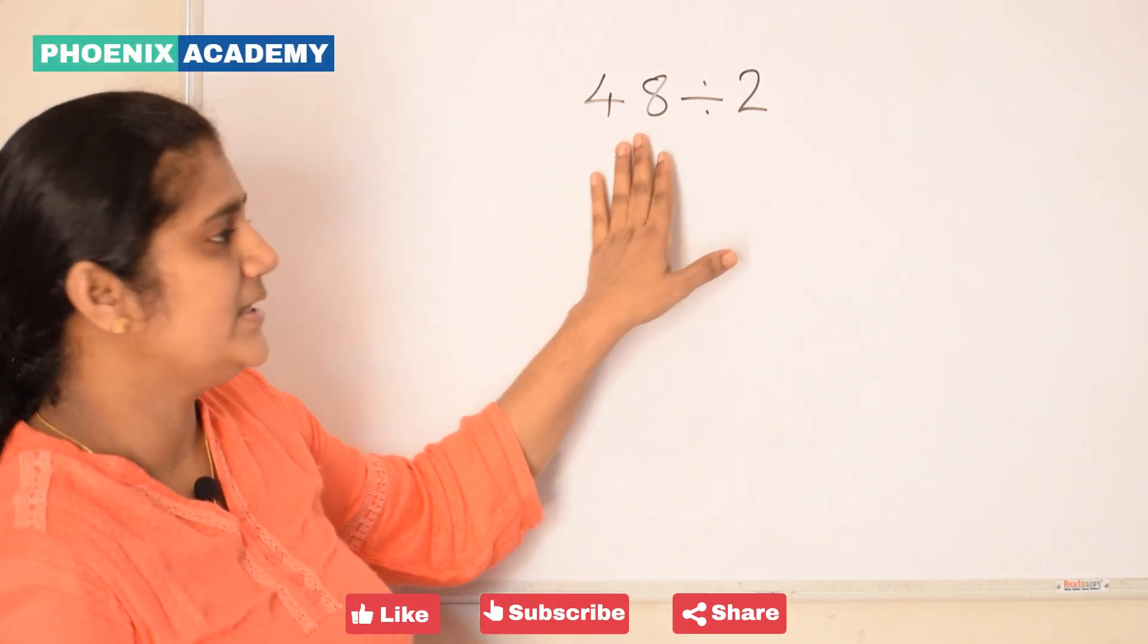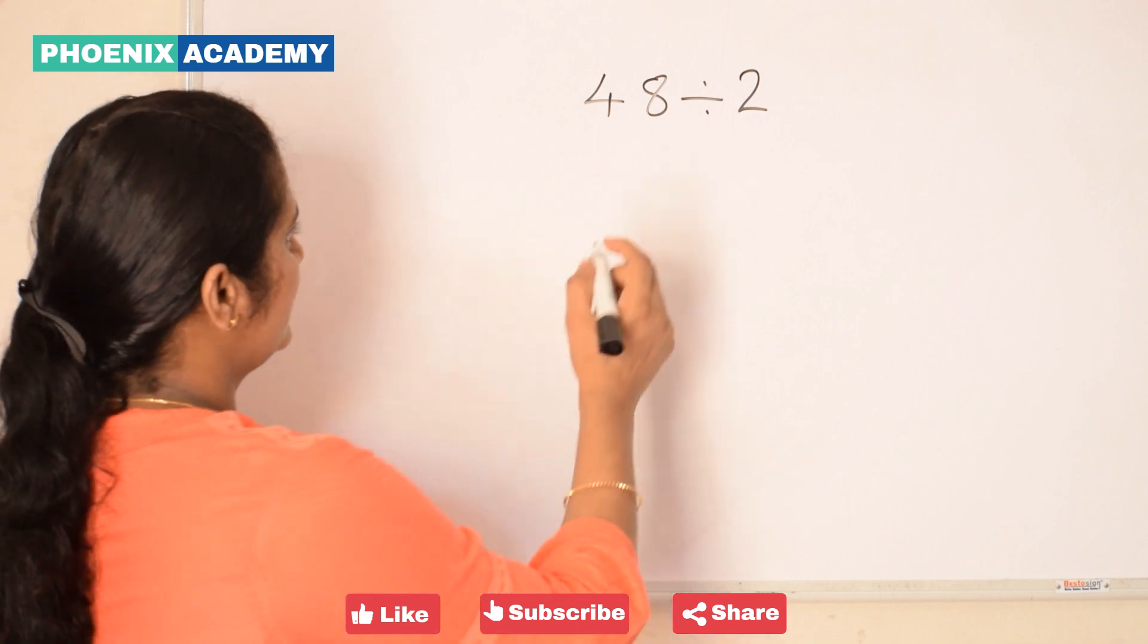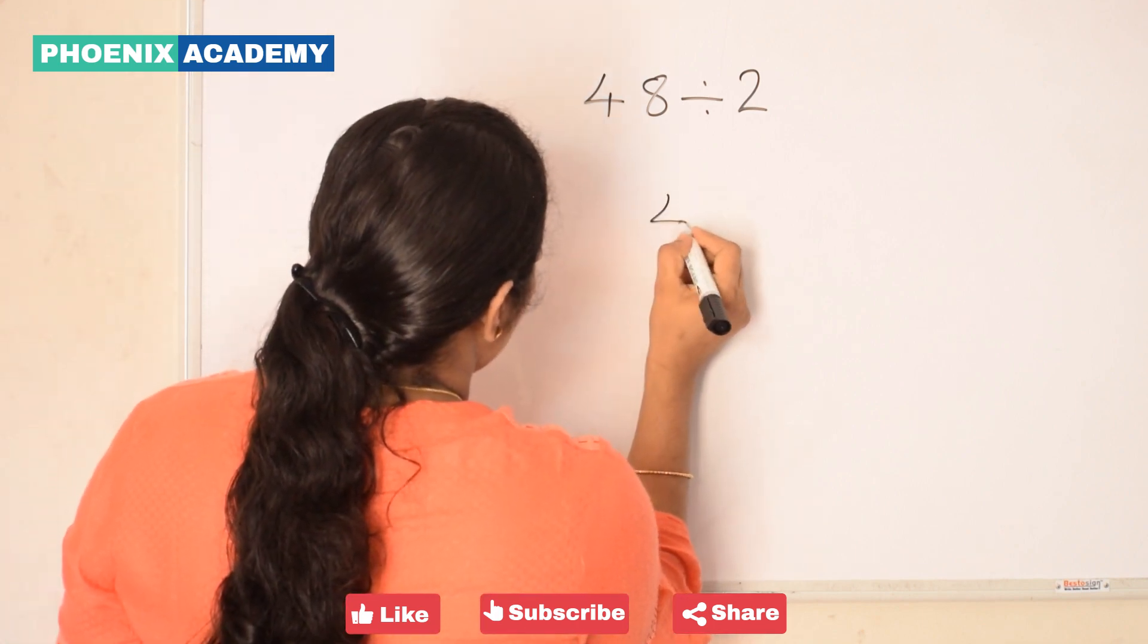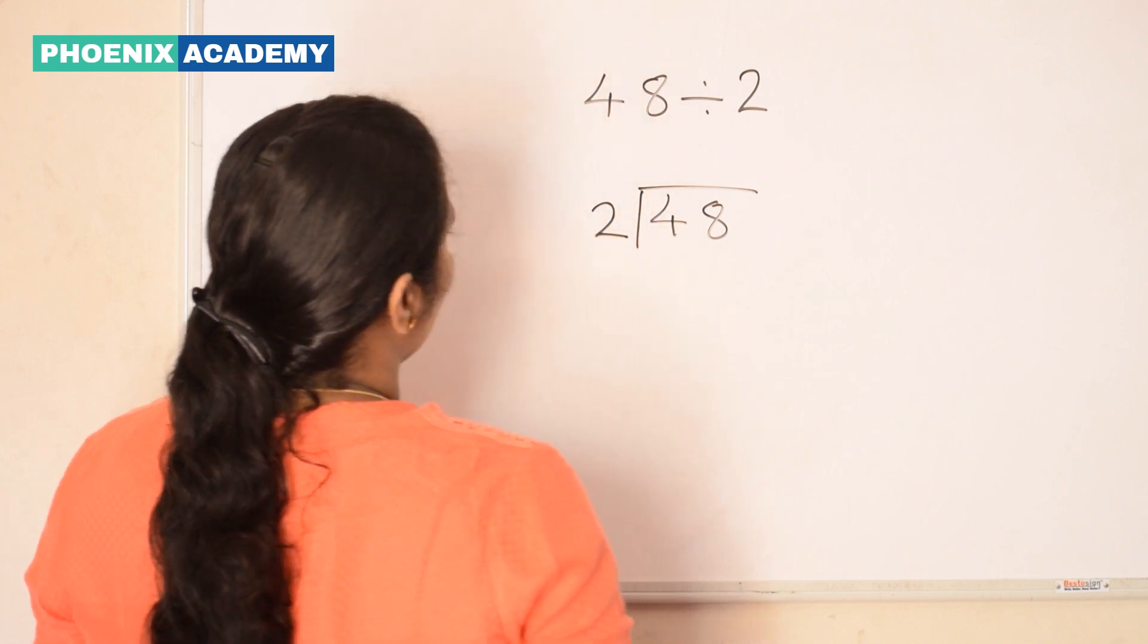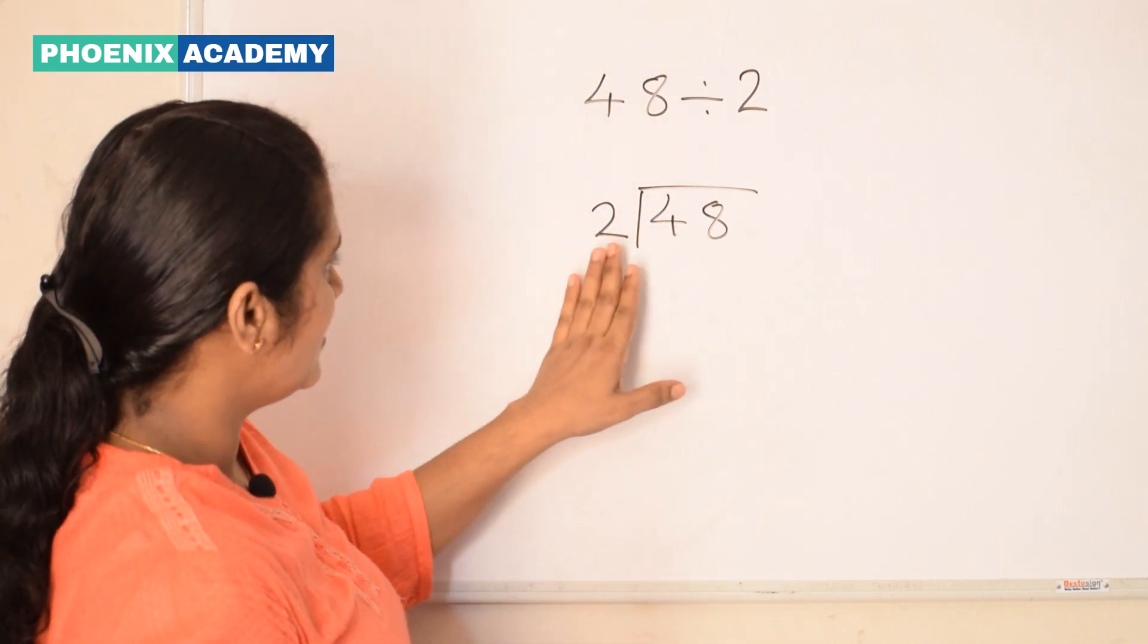Let's divide 48 by 2. First arrange the numbers in long division form like this. 48 divided by 2.